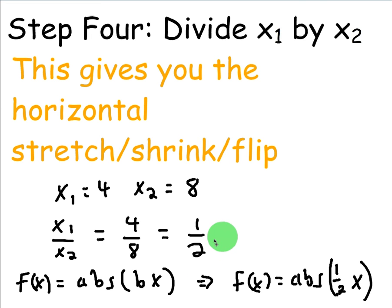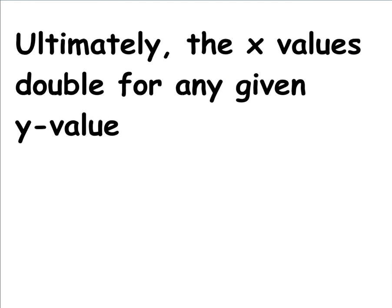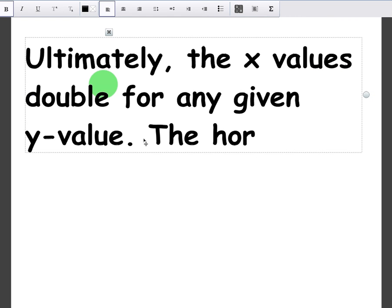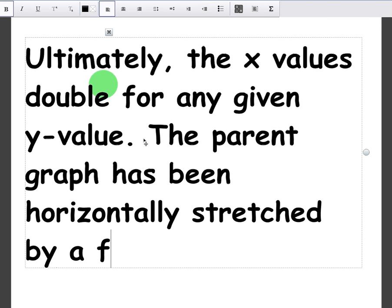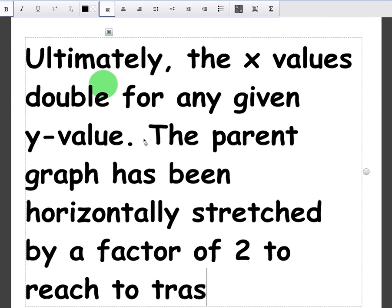So, what does that mean? That means your b value is 1 half. Now, there is another way to say it. It's kind of confusing. We know that our b value is 1 half, but ultimately the x value is double for any given y value. So, you could say that the horizontal stretch, the parent graph has been stretched, horizontally stretched by a factor of 2 to reach the transformed.